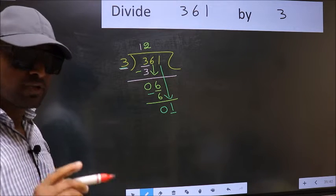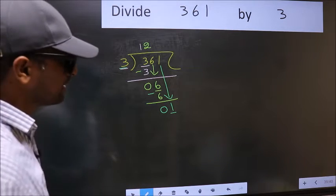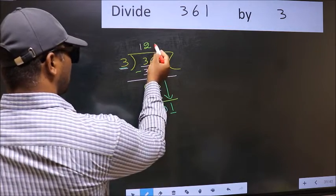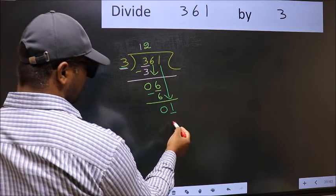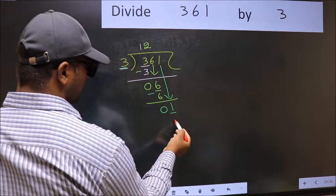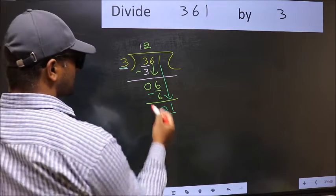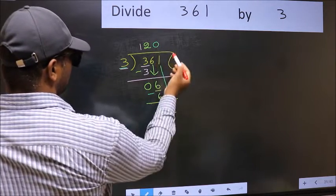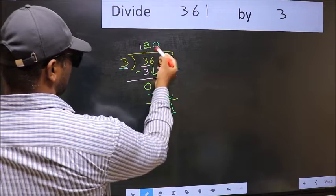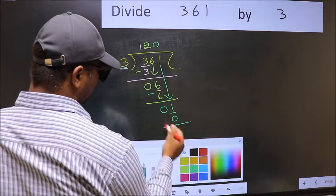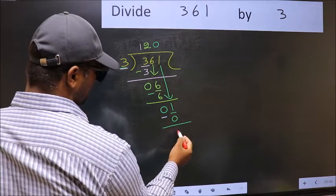Instead, what you should think of is, what number should we write here? If we take 1, we get 3 here. But 3 is larger than 1. So what we should do is we should put 0. So 3 into 0, 0. Now you subtract. 1 minus 0, 1.